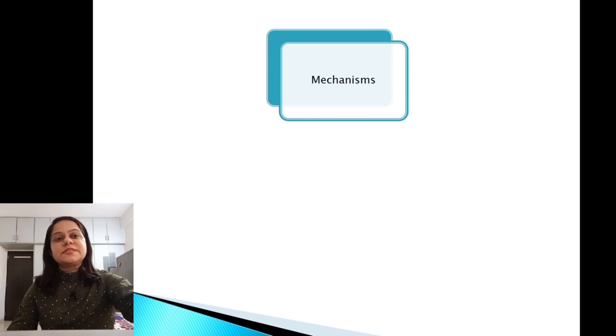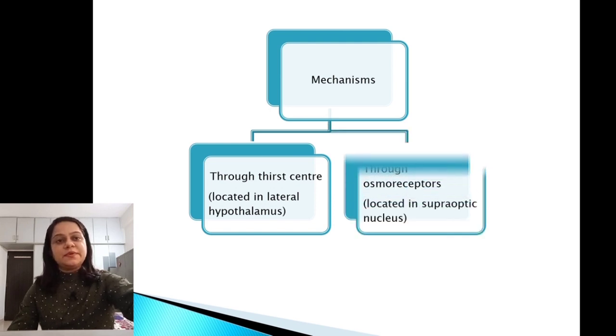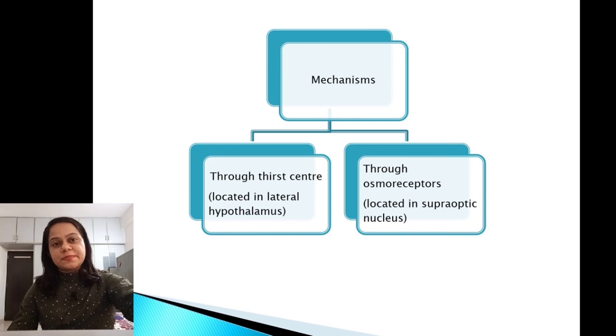Different mechanisms involved in regulation of water balance are through thirst center, which is located in the lateral hypothalamus, and through osmoreceptors, which are located in the supraoptic nucleus.